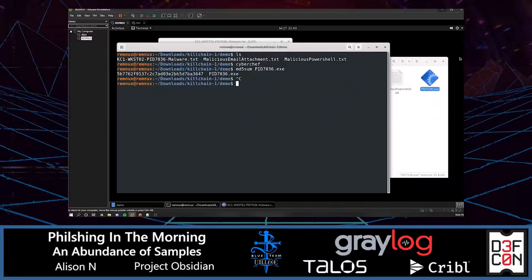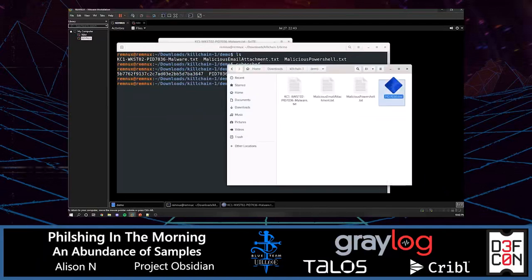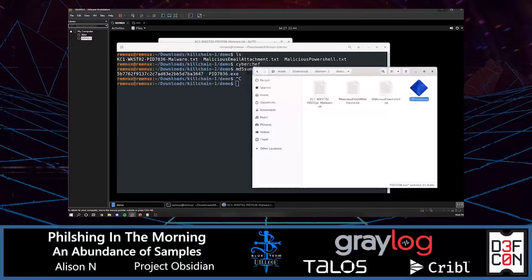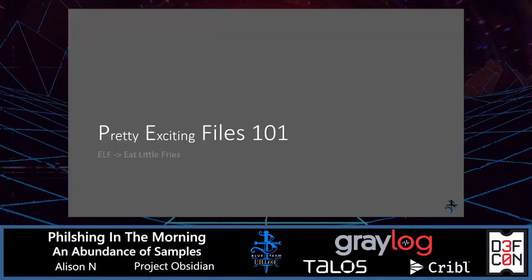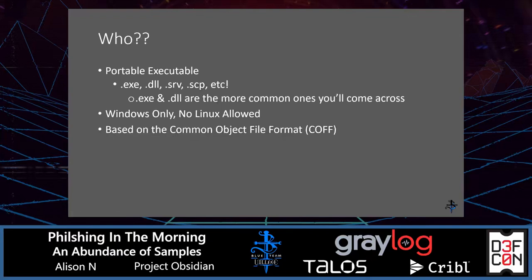Very quickly, now that we know this is a Windows Portable Executable, we should probably understand what we're looking at first. Before we start digging into it, let's go over what Portable Executables are at a high level. They're Windows Executables, commonly seen as .exe and .dll extensions. Less commonly you can see them as .srv, .scp, and so on. These are Windows only — their Linux equivalent would be ELF, Executable Link Files. They're both based on the Common Object File Format, or COFF.